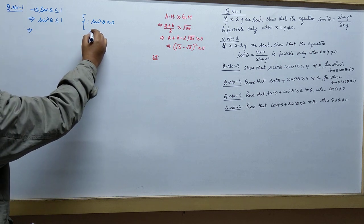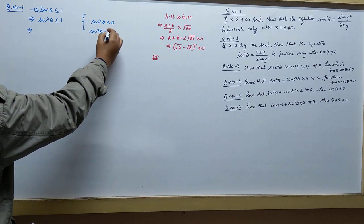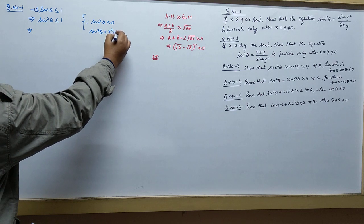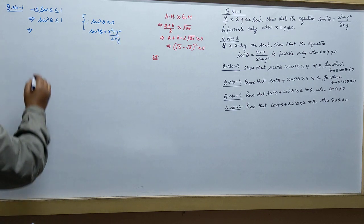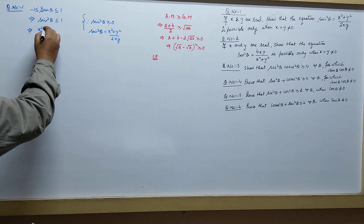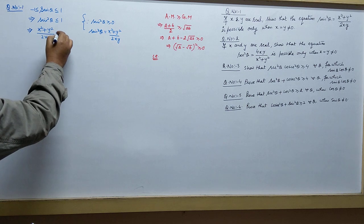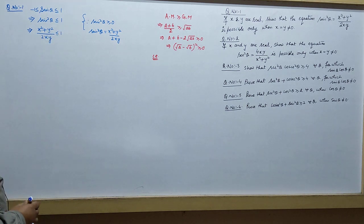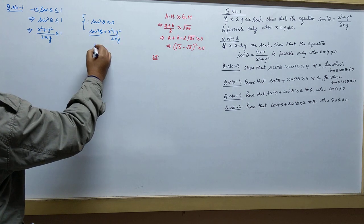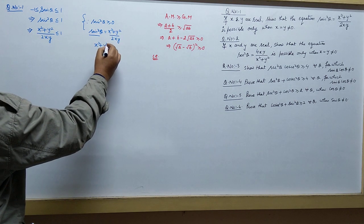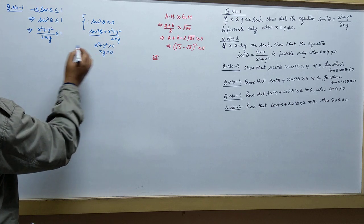The statement is: sin squared theta is equal to x squared plus y squared upon 2xy. Substituting the value, it is equal to x squared plus y squared over 2xy. We take the square part of sin squared theta.